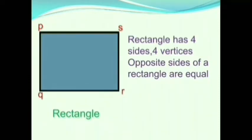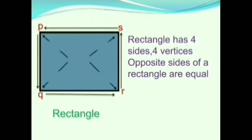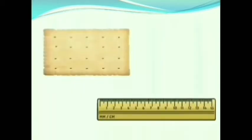Now we will learn about rectangle. A rectangle has 4 sides and 4 vertices. The opposite sides of a rectangle are equal. Now let us see some examples. The biscuit is in a rectangular shape. You can see rectangles everywhere — the scale which we use to draw lines, and the door. Observe that in all these objects the opposite sides are equal.